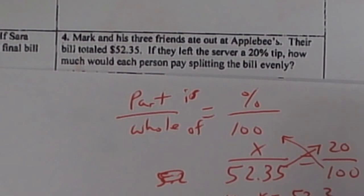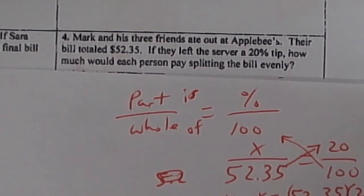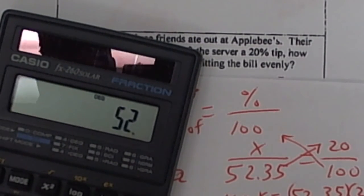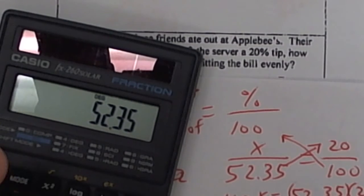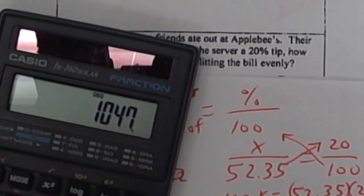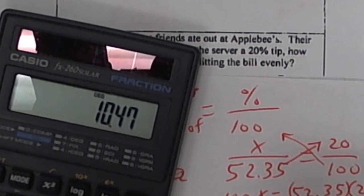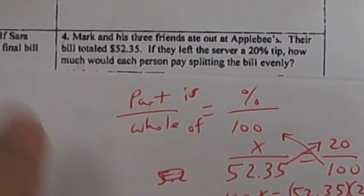So it's going to be 52.35 times 20, and then you've got to divide by 100 to get the answer. So the tip, you're going to take 52.35, so 52.35 times 20 equals, and then divide by 100. So the tip was $10.47. That's the tip.